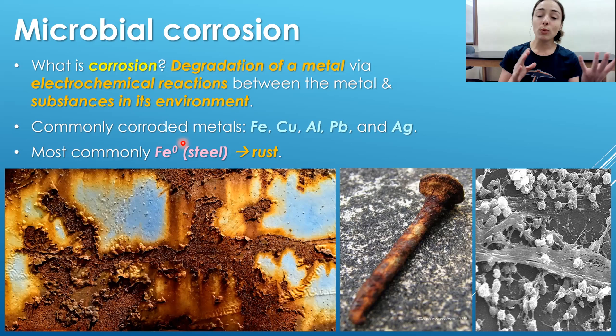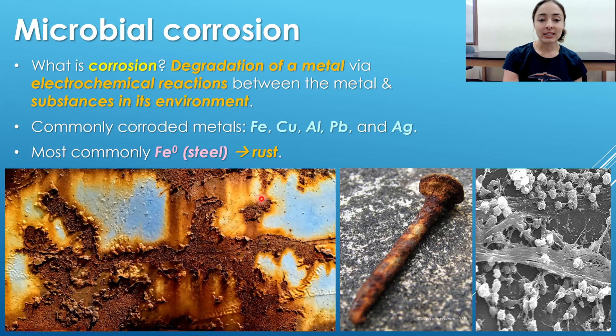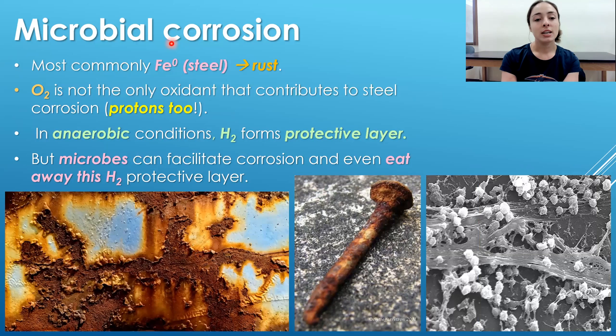If you watched the previous microbial weathering video, we talked about iron 2 and iron 3, but those forms are not present in steel. Steel contains a further reduced form of iron with an oxidation state of zero — very reduced, which is why it's very susceptible to oxidation and rust. Rusting is the oxidation of iron or other reduced metals, and the thing that causes the oxidation of iron in steel is oxygen.